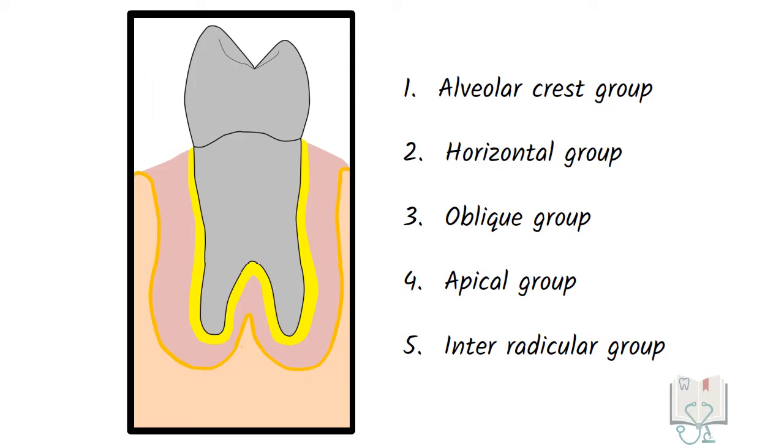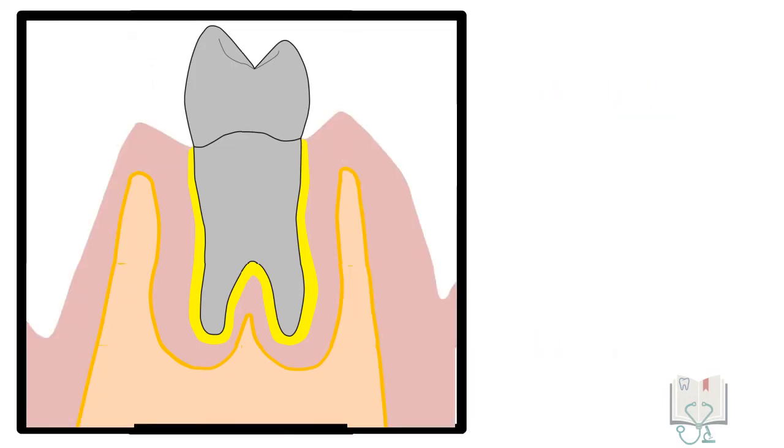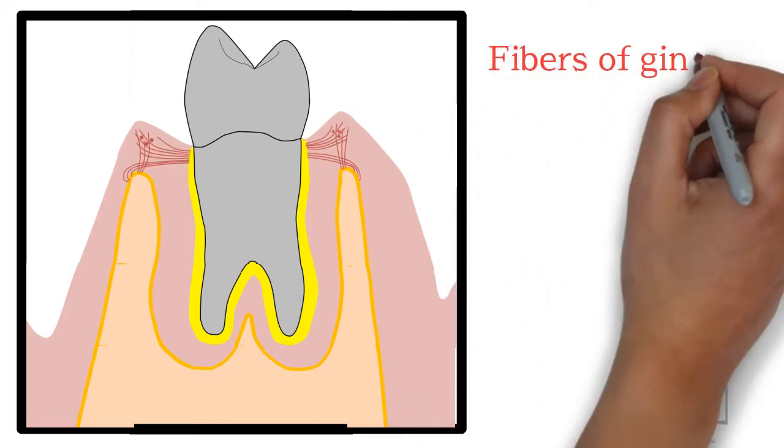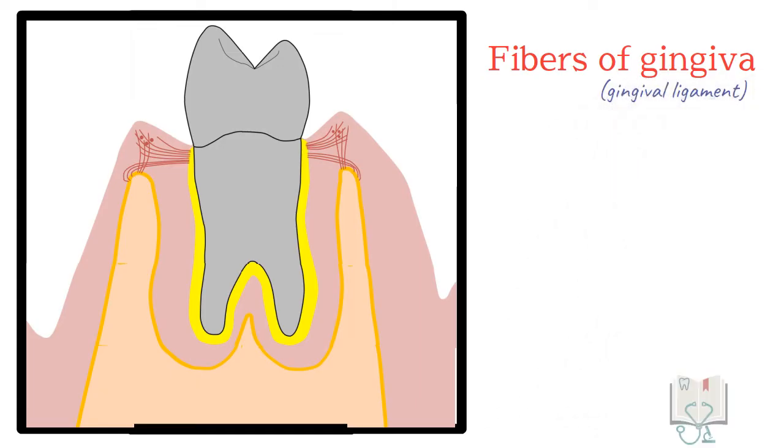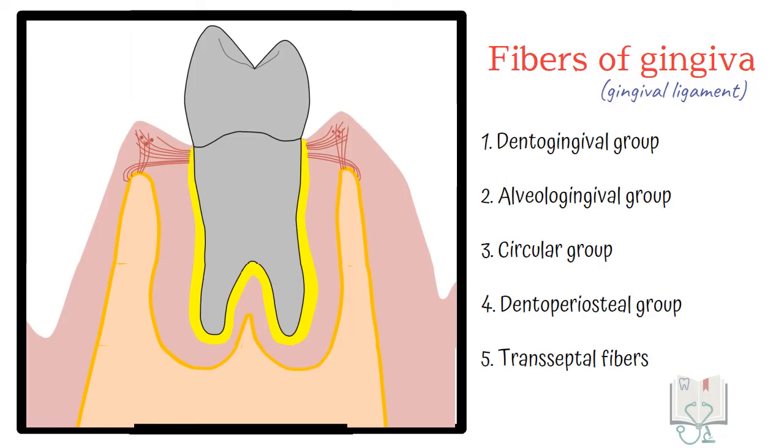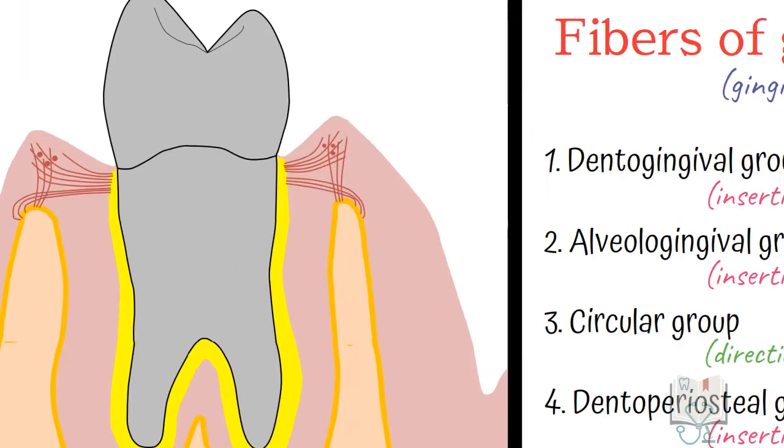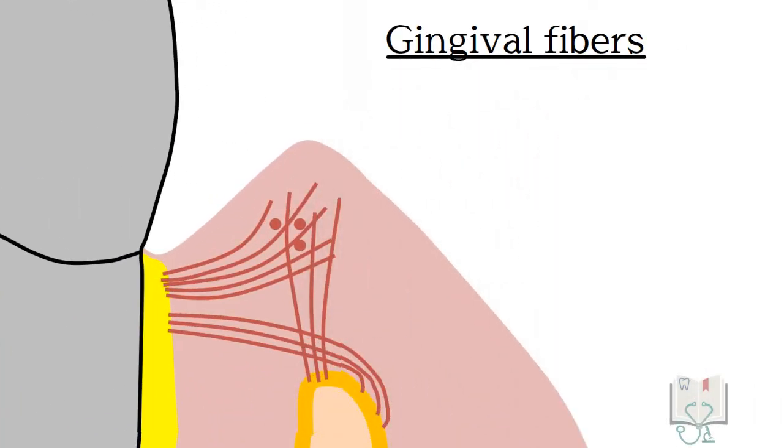So that was about the fibers of the periodontal ligament. Now if we take a look at the gingiva, there are some fibers in its connective tissue called gingival fibers which collectively form the gingival ligament. They are also classified into five groups. They are named according to their two insertion points or their directions. Let us take a look at these gingival fibers individually.